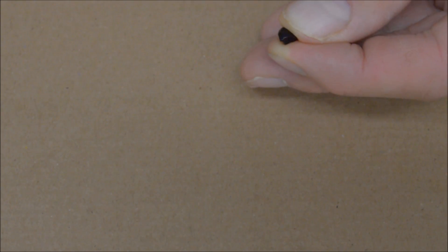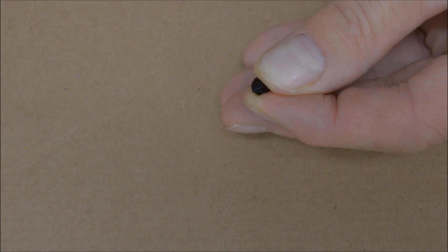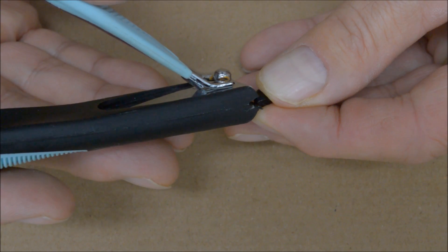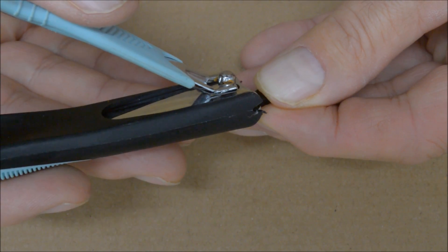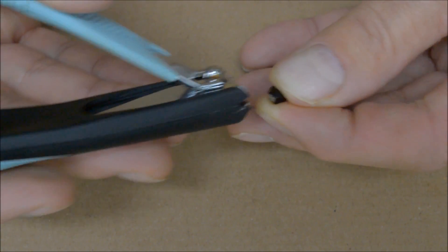For mid-sized seed, nail clippers work quite well. Use them to clip off a small amount of the seed coat so that you can see the inner part of the seed.